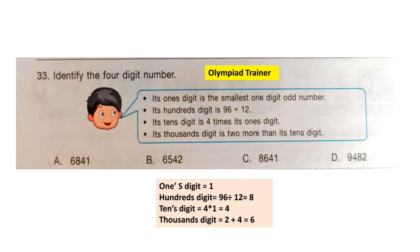Question 33: Identify the 4-digit number. Its 1's digit is the smallest 1-digit odd number, which is 1. Its 100's digit is 96 ÷ 12 = 8. Its 10's digit is 4 times its 1's digit, so 4 × 1 = 4. Its 1000's digit is 2 more than its 10's digit, so 2 + 4 = 6. Putting it together, the number is 6841. Option A is the correct answer.